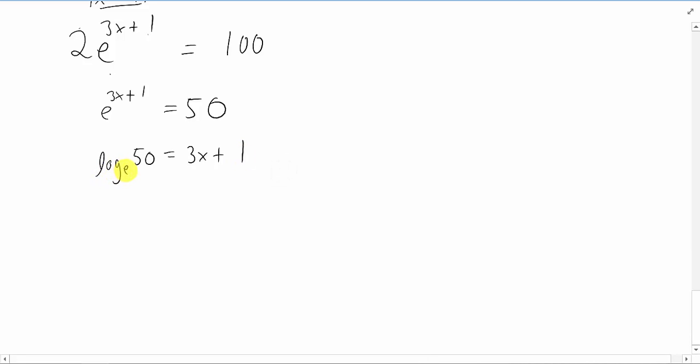Of course we usually don't write log base e, we usually write natural log. Now solving for x is just a little bit of algebra. We can subtract 1 from both sides. Now to get x by itself we are going to divide both sides of the equation by 3. If you enter this into your calculator that will be your answer for x. I have given you the exact answer. If you type it into your calculator you will get a decimal which will be an approximation.